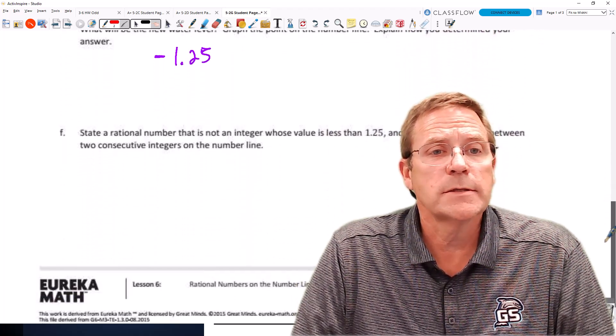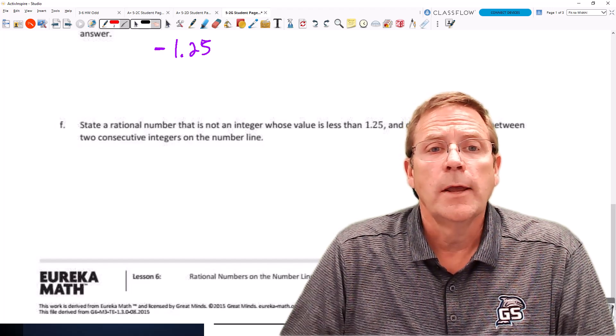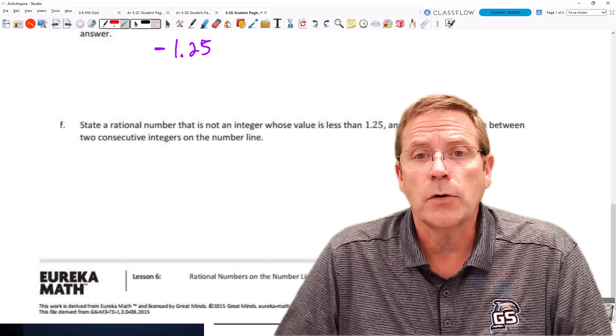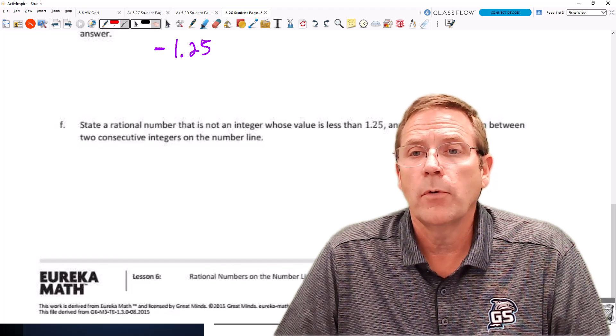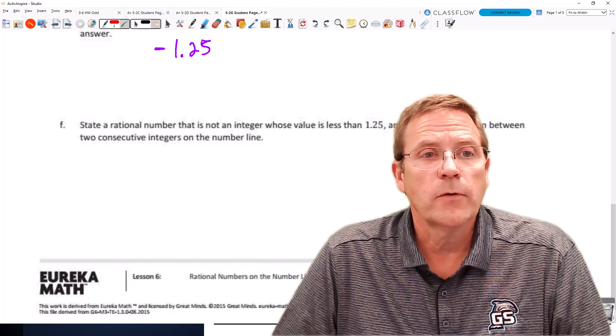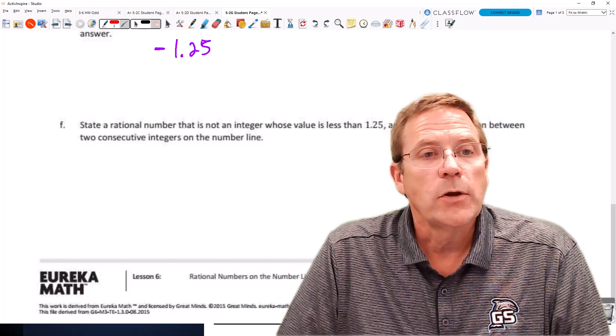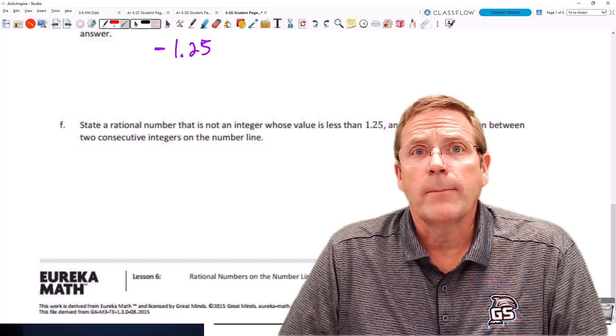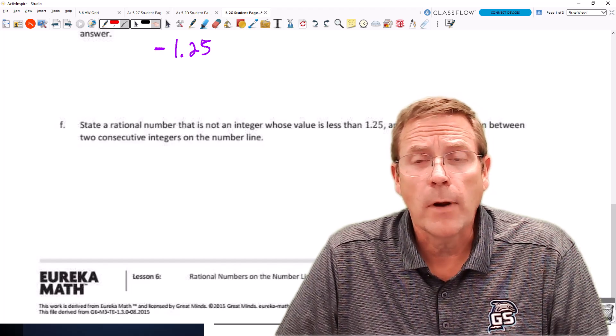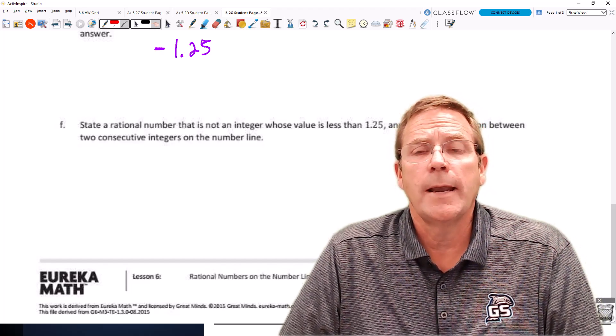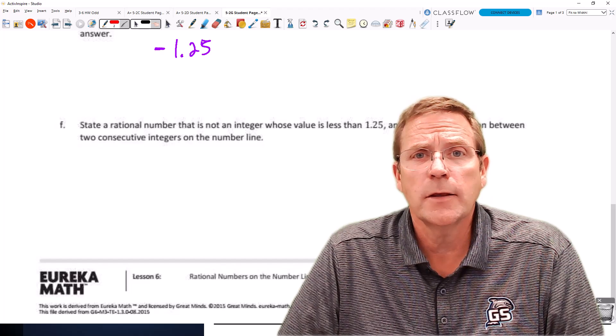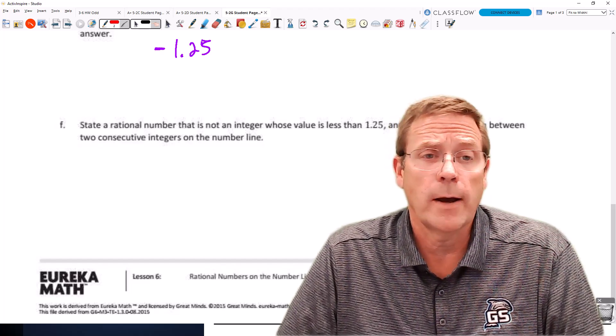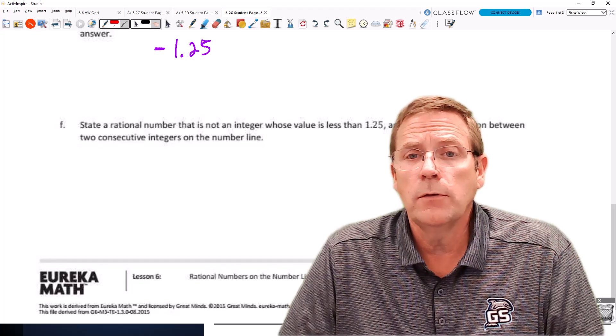Part F says, state a rational number that is not an integer whose value is less than 1.25. Describe its location between two consecutive integers on the number line. So we can pick any number, any rational number, which means it has to be a fractional value that is less than 1.25.